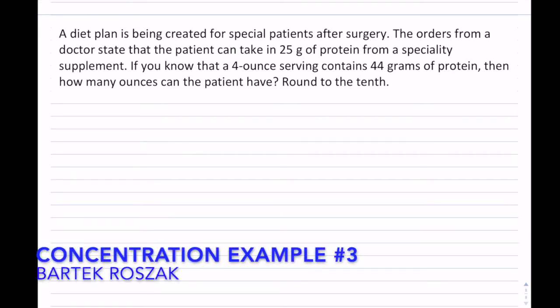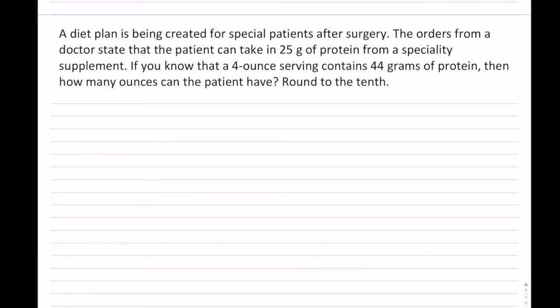A diet plan is being created for special patients after surgery. The orders from a doctor state that the patient can take in 25 grams of protein from a specialty supplement. If you know that a 4-ounce serving contains 44 grams of protein, then how many ounces can the patient have?